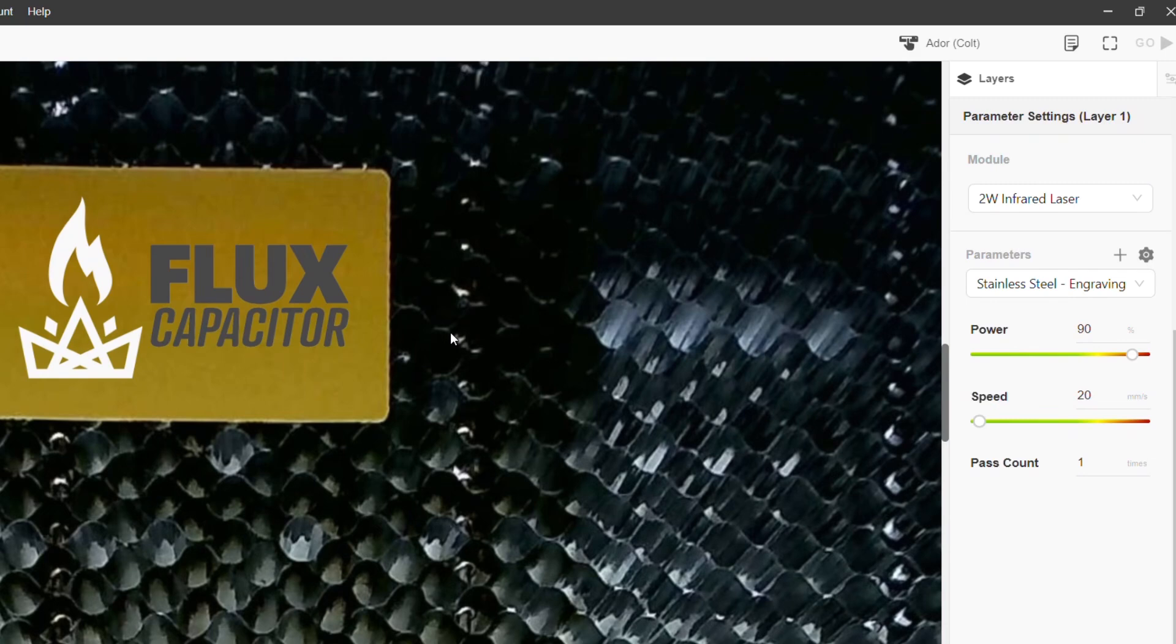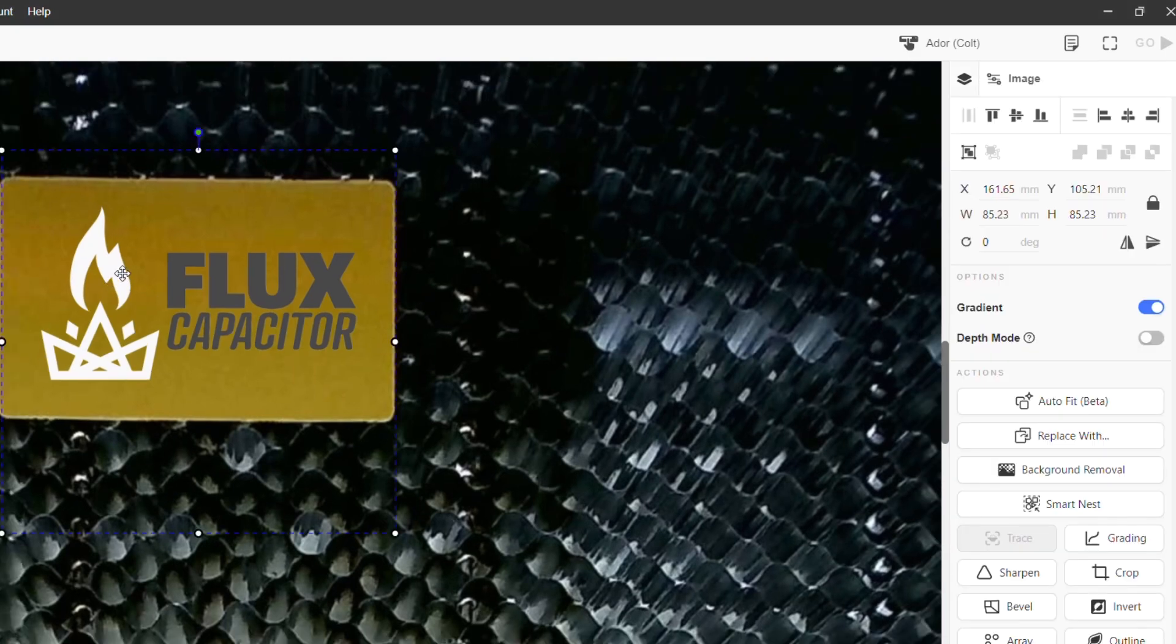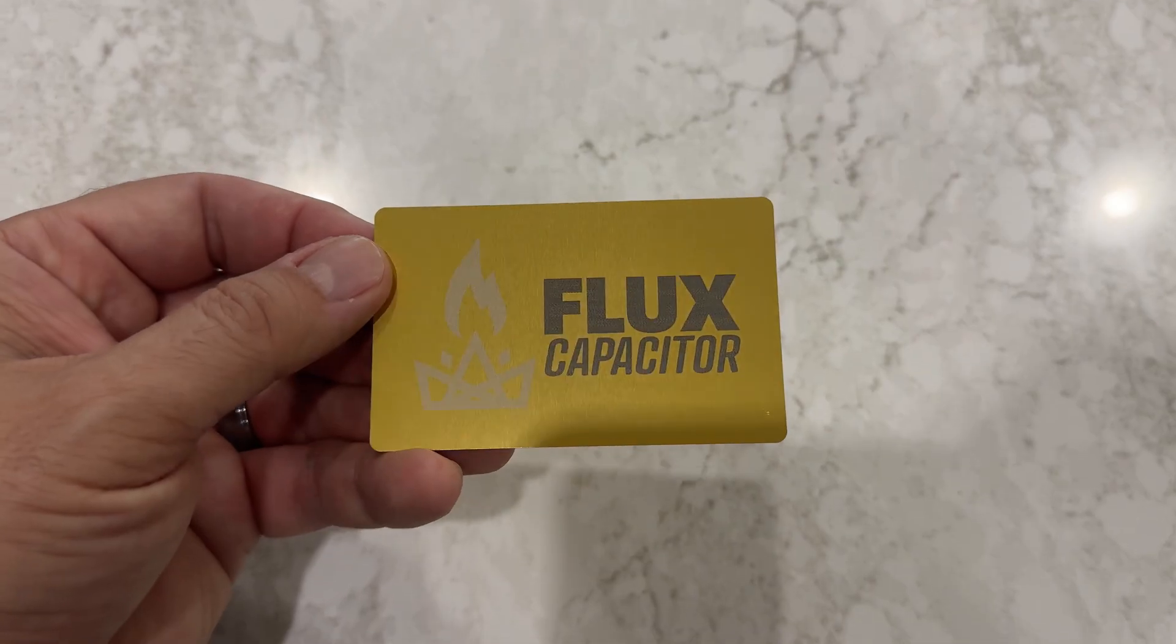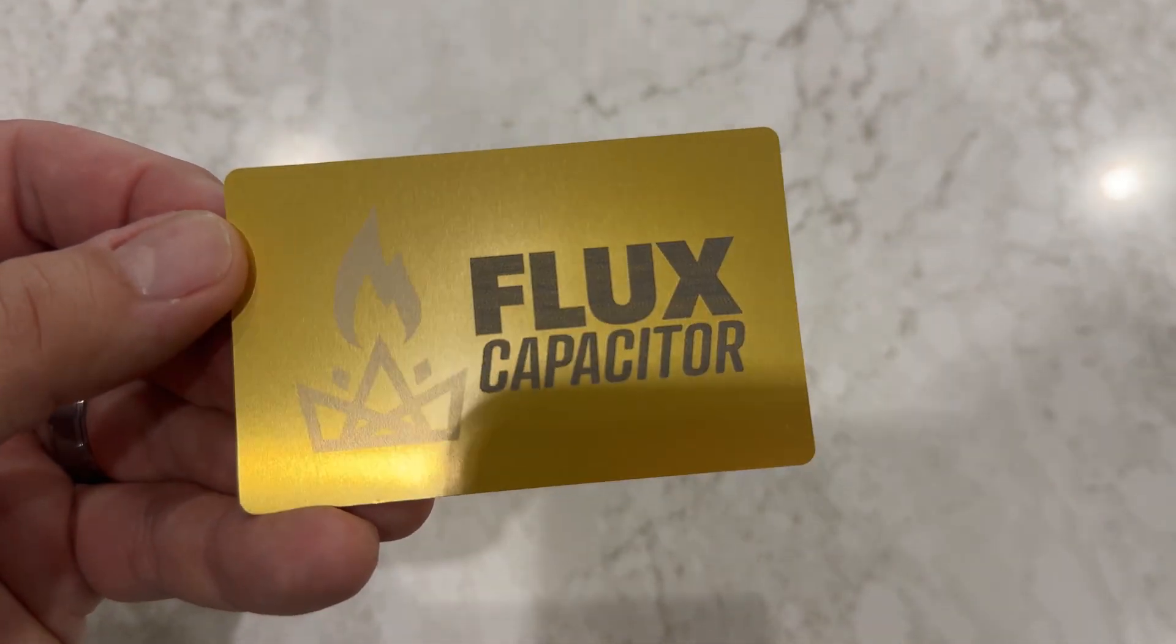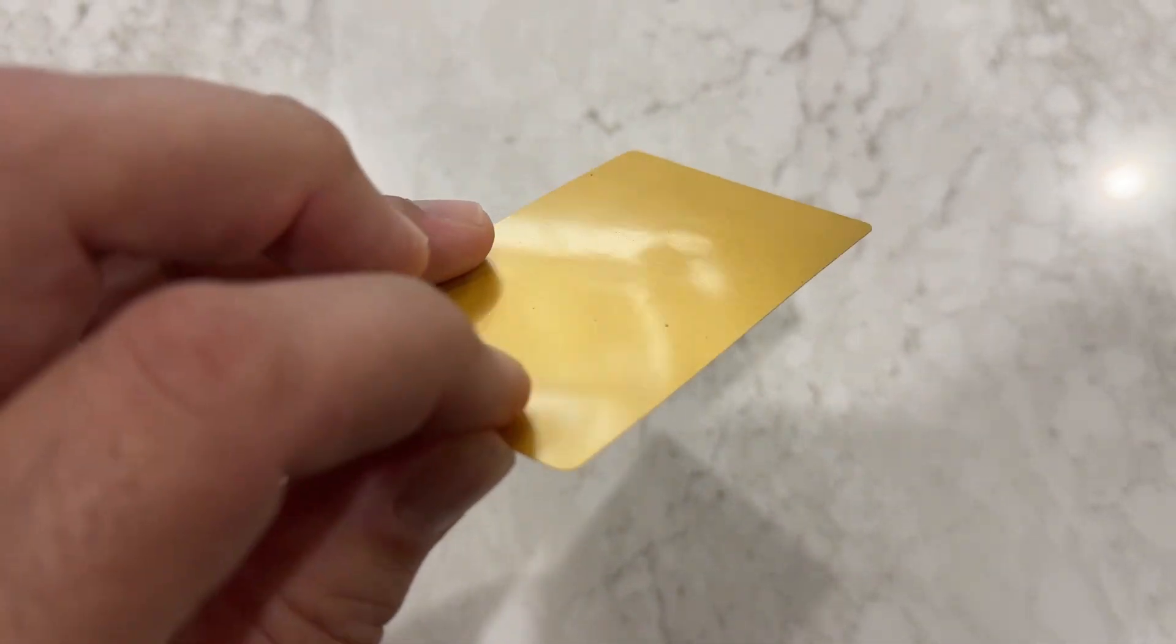So I did something without a photograph on a business card. Did this little graphic we came up with, flux capacitor. You see what I did there. And that came out amazing. The fire and the logo came out a little bit lighter and the letters came out nice and dark. Very clean engraving. I was very happy with the results here.